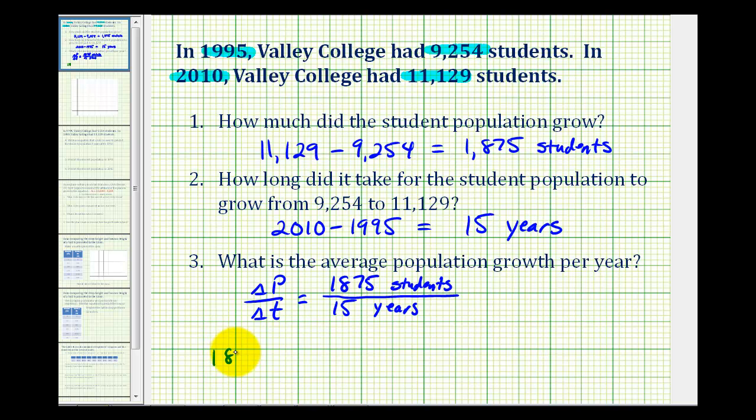1,875 divided by 15 is equal to 125. So this tells us the average growth is 125 students per year.